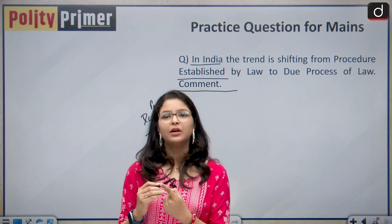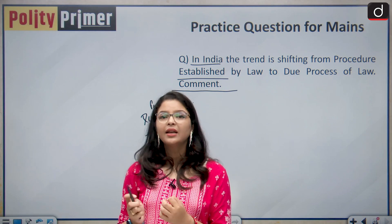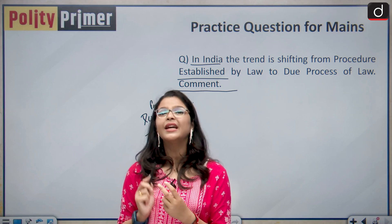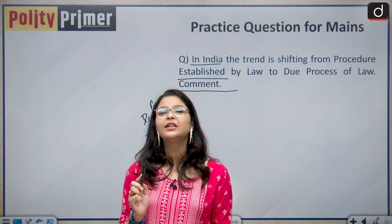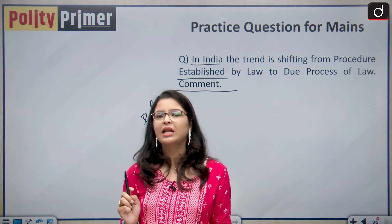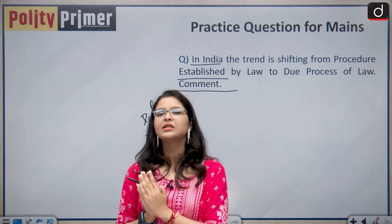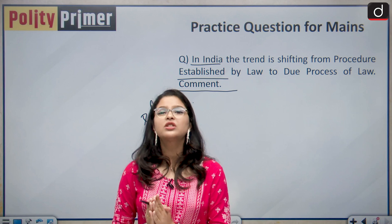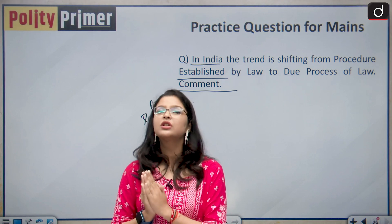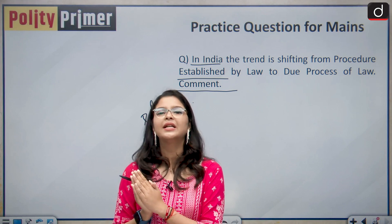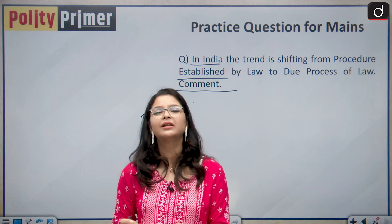You will also state how the doctrine of due process of law has gained importance in recent Supreme Court judgments and quote latest case laws under Article 21. State that every law in India is now examined on the touchstone of fairness. Conclude that India is following the due process of law doctrine because it has a wider scope and is invoked to ensure a more just procedure under the law, protecting the fundamental rights guaranteed in Part 3 of the Indian Constitution.